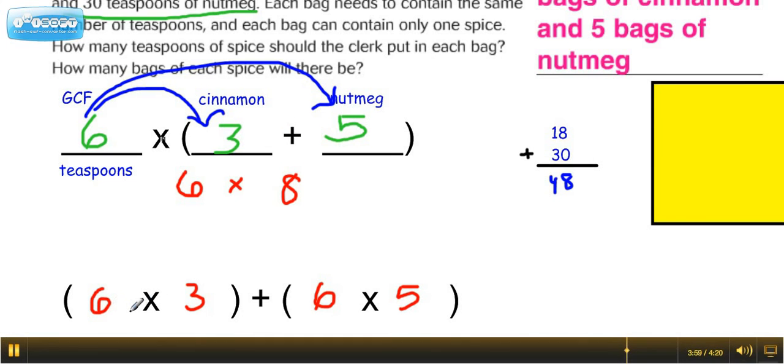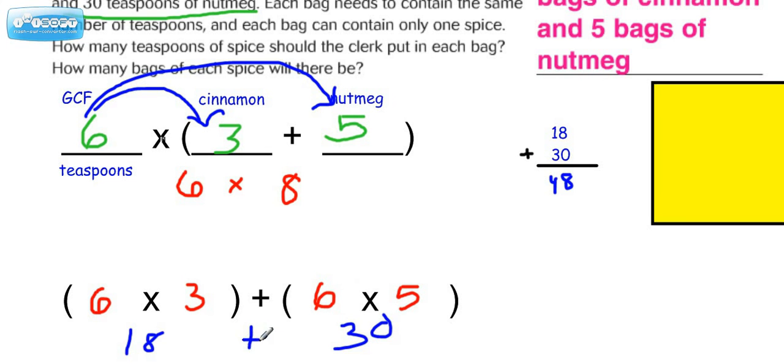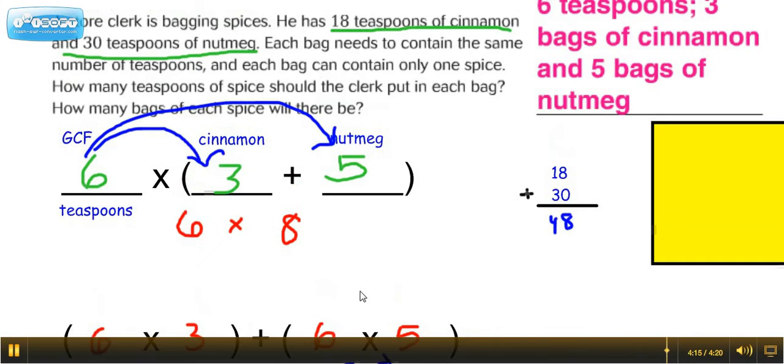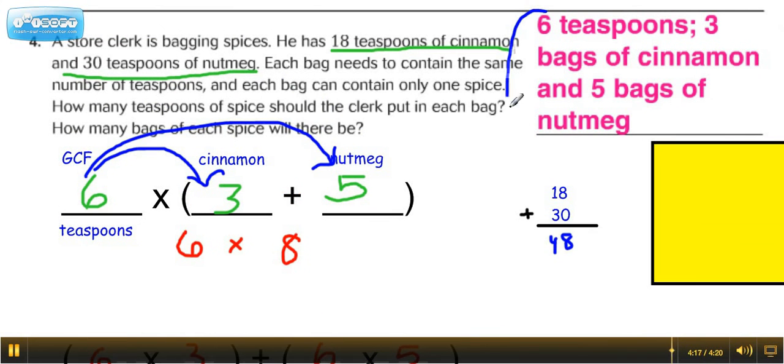Now if we went ahead and did order of operations here, isn't that 18? Look familiar. Isn't this 30? Look familiar. And doesn't that equal 48? Alright, so we've applied distributive property, and we've applied using GCF to find the answer to this question, which the answer is right here.